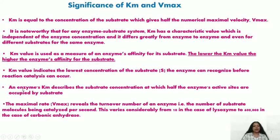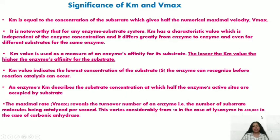This is synonymous with Km equaling the substrate concentration giving Vmax/2. When active sites of the enzyme are half-occupied by substrate, the substrate concentration equals Km. The last point is that Vmax reveals the turnover number of an enzyme — the number of molecules catalyzed per second — varying from 10 for lysozyme to 600,000 for carbonic anhydrase.